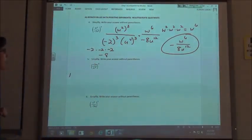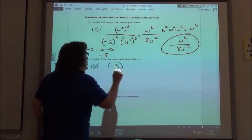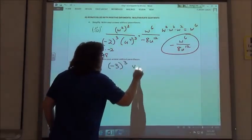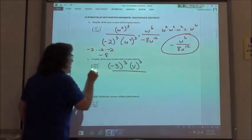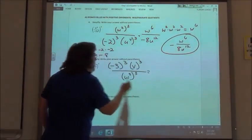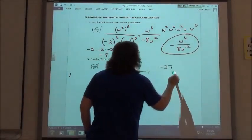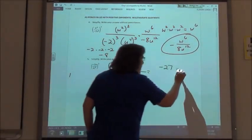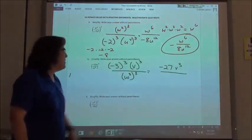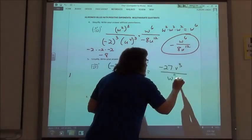So here again, if I'm using my power rule, again I'm cubing. I'm going to take the negative 3 to the third power, the v to the third power, and then the w cubed to the third power. So negative 3 to the third power would be negative 27, v raised to the third power, v cubed, and then w cubed raised to the third power, 3 times 3 is 9, so w to the ninth.